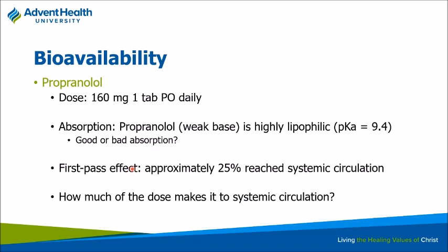Looking at propranolol's pharmacokinetic factors: in terms of absorption, propranolol is a weak base, highly lipophilic, with a pKa of about 9.4. So it has fairly good absorption in the small intestine because as it gets there the pH goes up, aiding absorption of that weak base. In the stomach it would not be absorbed well because it'd be in a more charged state. First-pass effect means only 25% of the drug actually makes it into systemic circulation — 75% is taken off by first-pass.